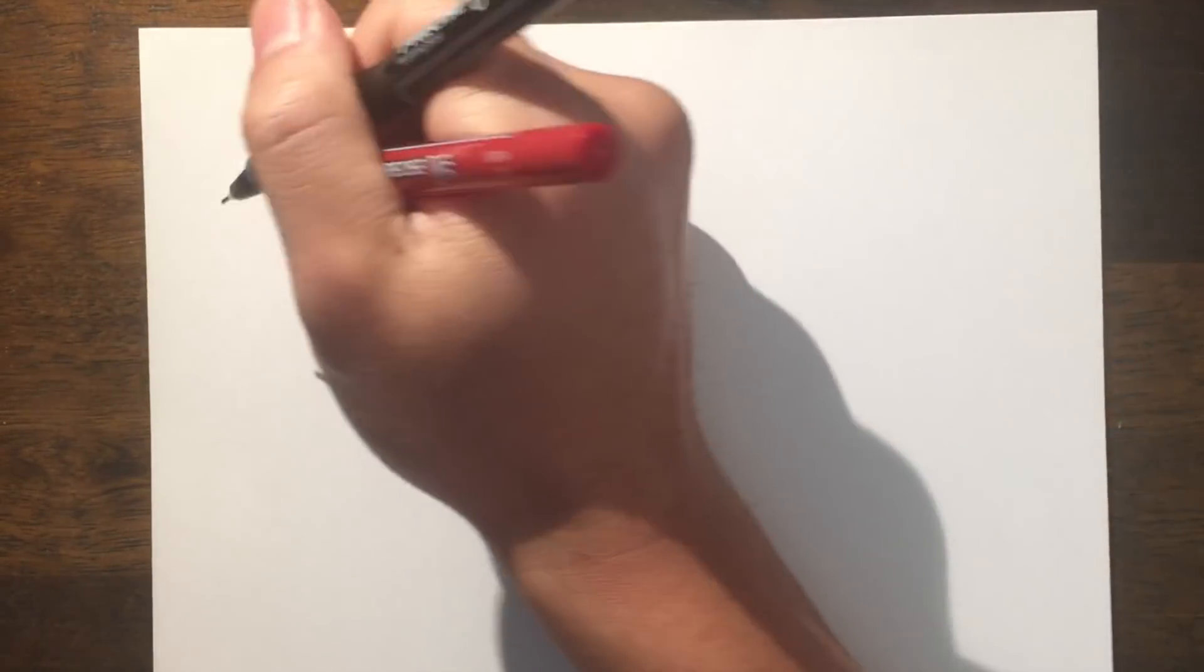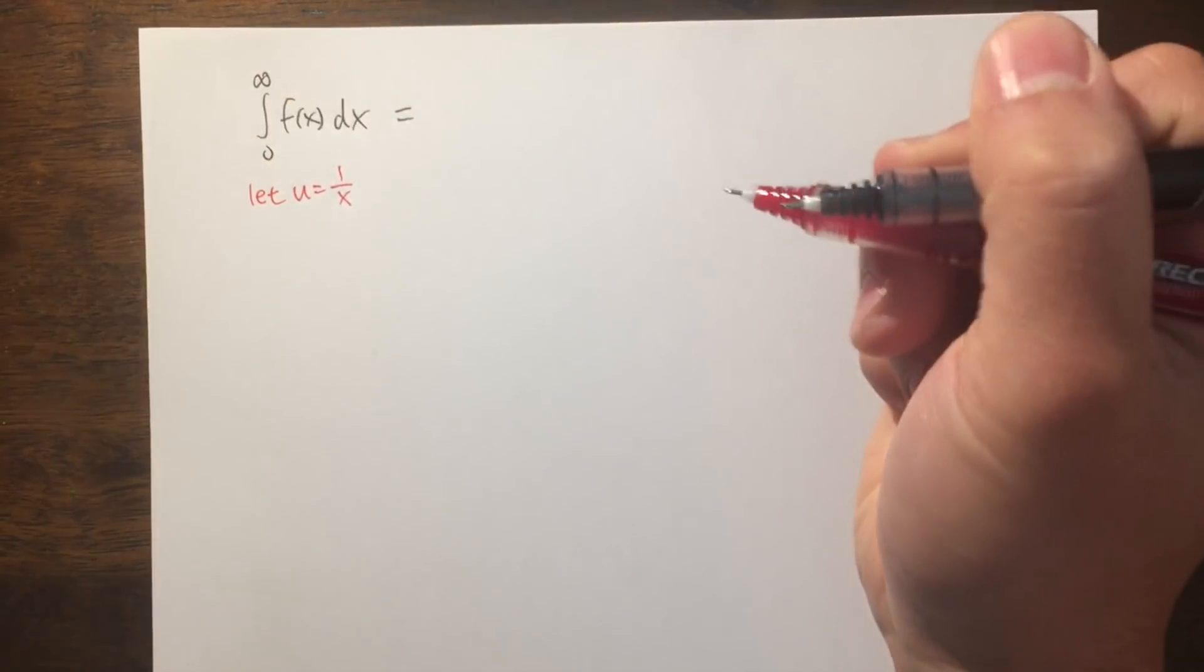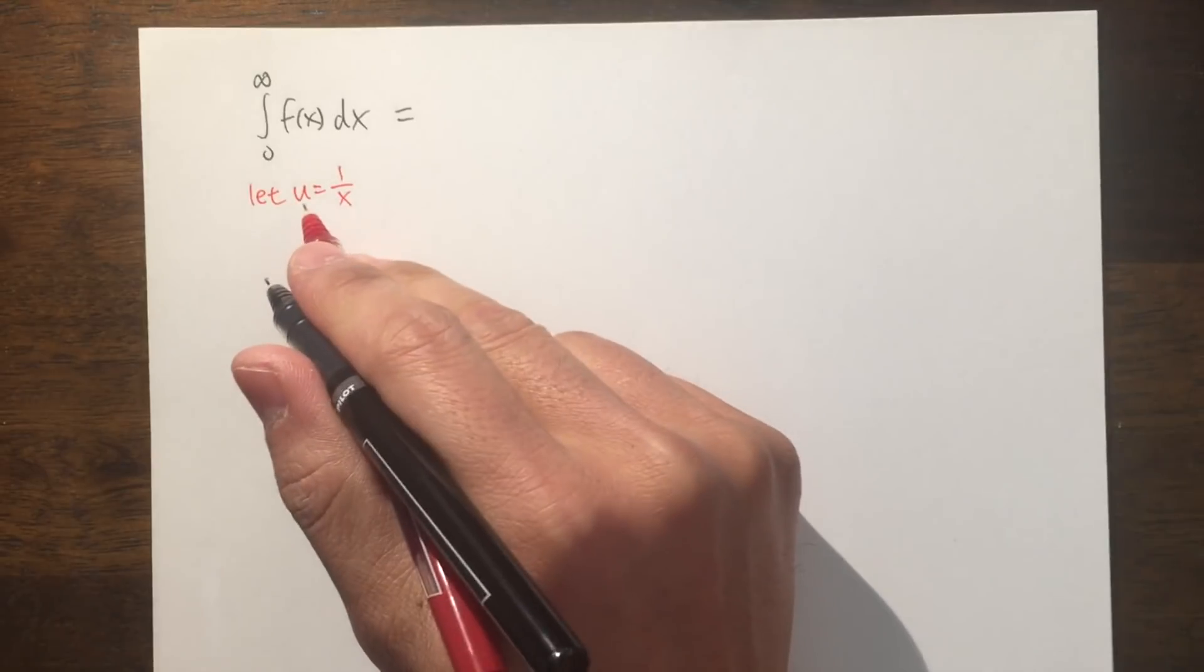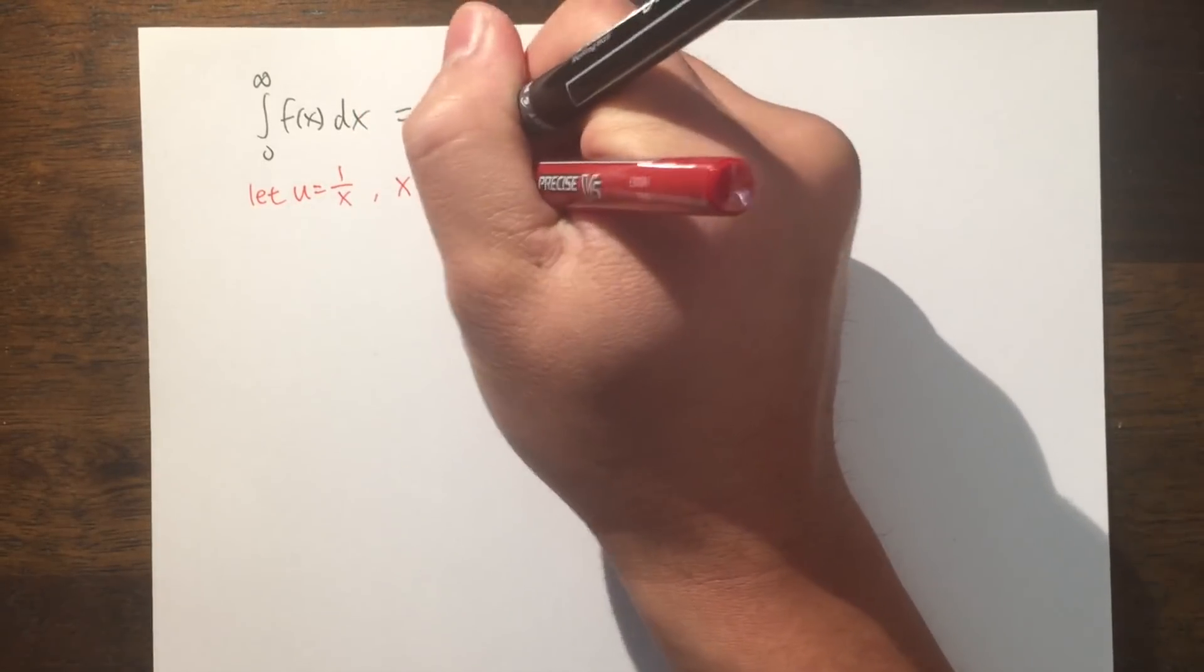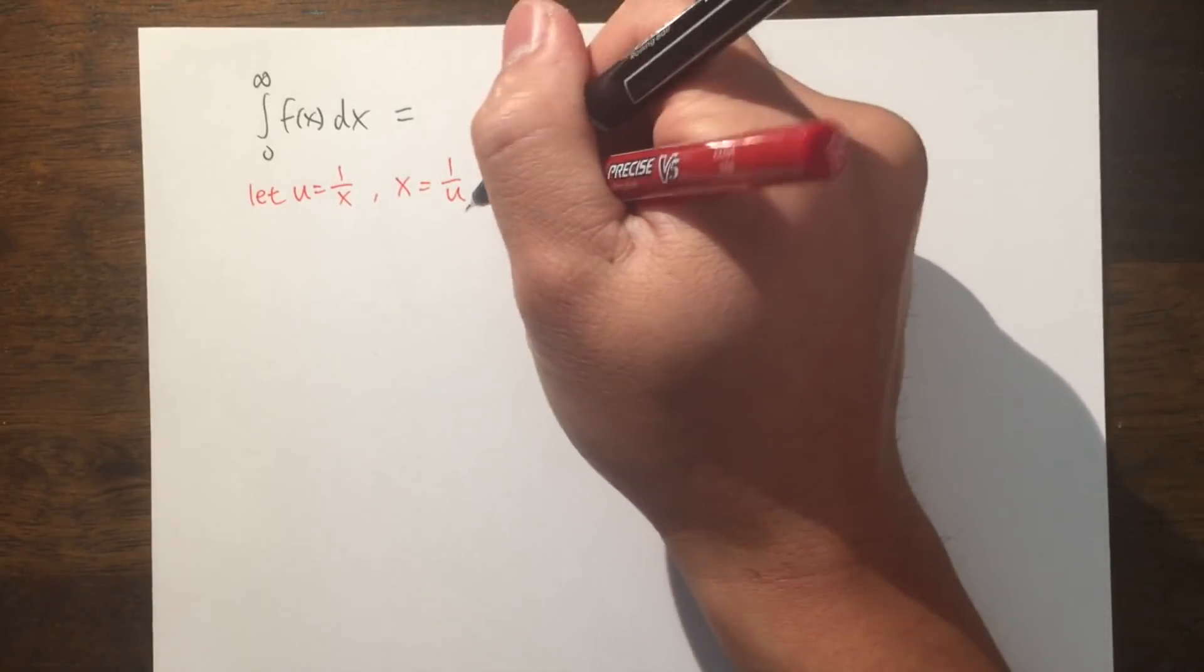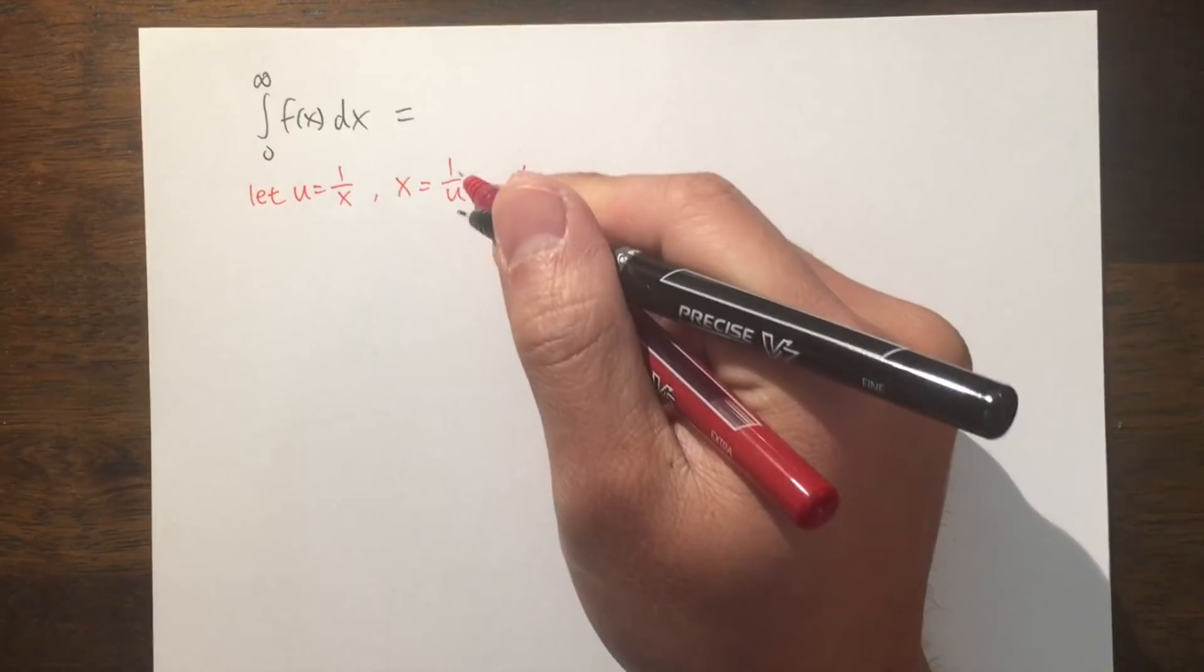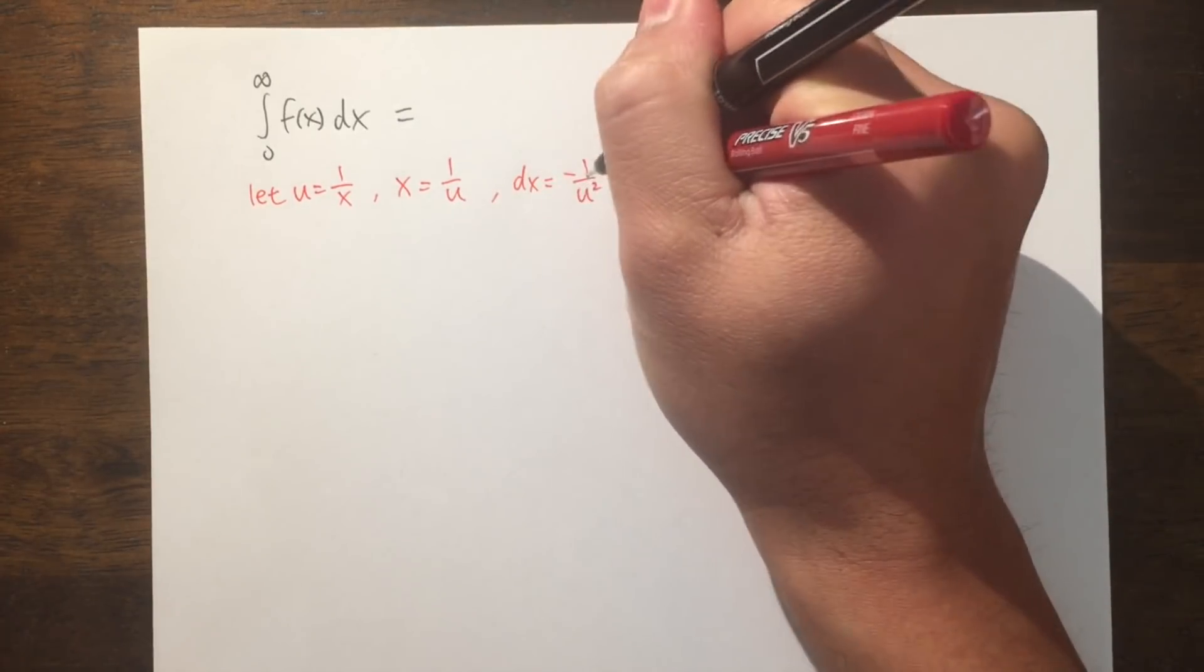To do this, I'll first let u equal 1 over x. I'll solve for x by multiplying both sides by x and dividing both sides by u. So in other words, x equals 1 over u. From here, I'll take dx into the u world as well. Let's differentiate both sides. We get dx equals the derivative of 1 over u, which is negative 1 over u squared.